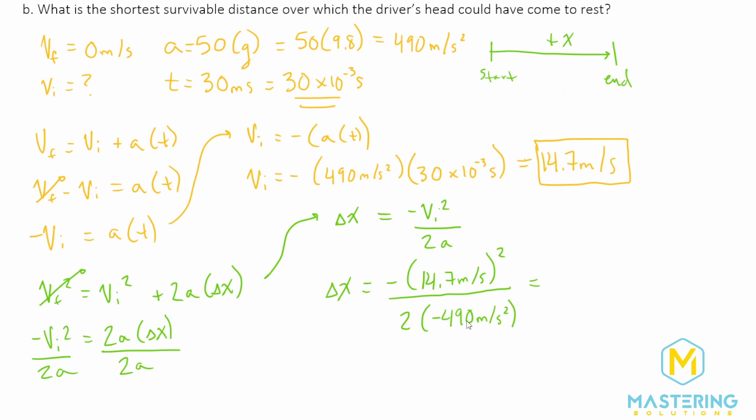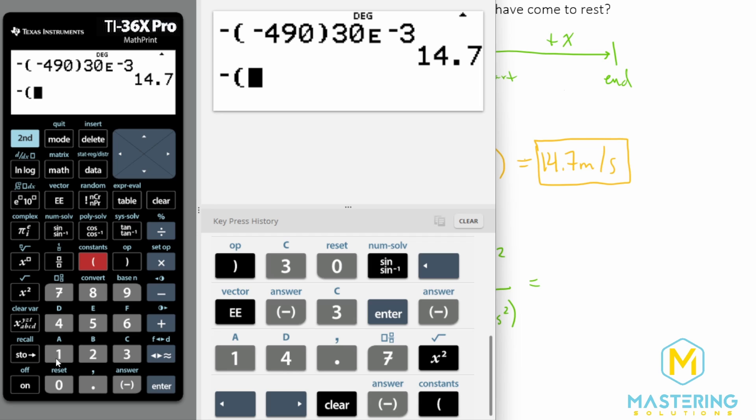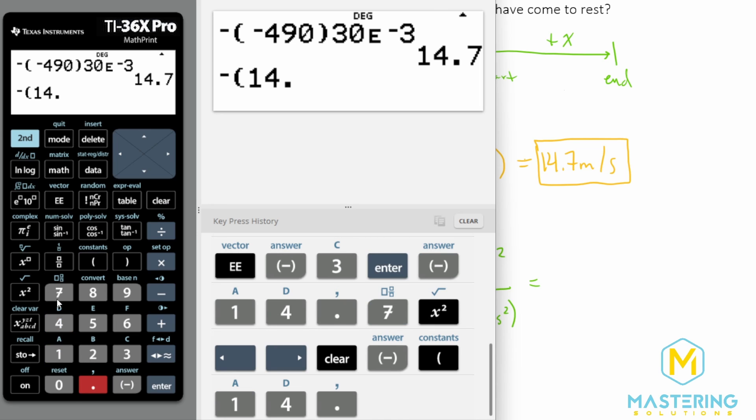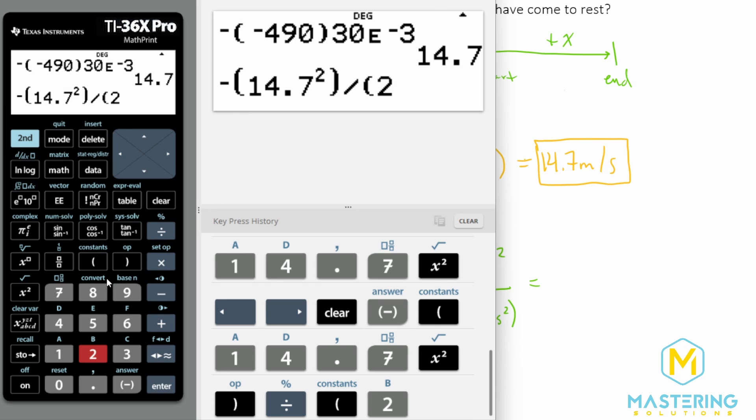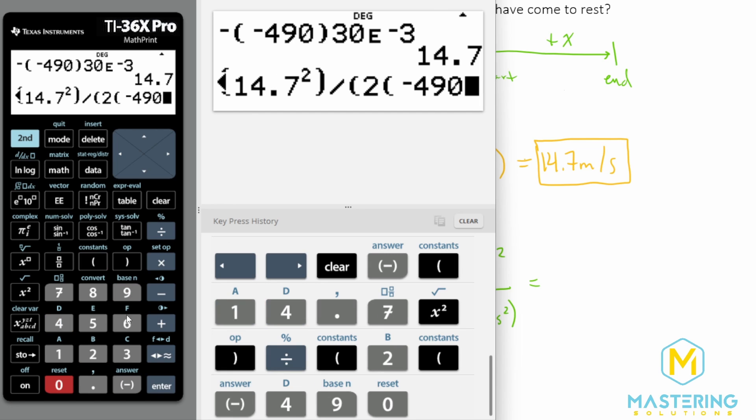And so it's just again, confirming that we've done our math correctly by thinking about that conceptually. So now we have negative 14.7 squared. And then we'll divide all that by 2 times the acceleration, which we said was negative 490 meters per second squared,